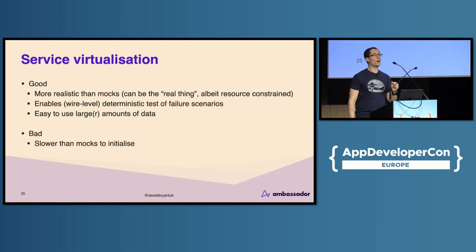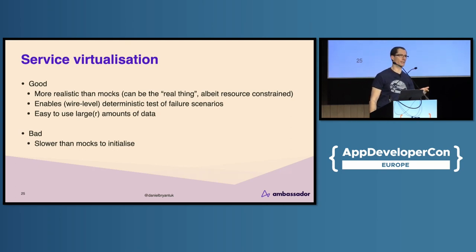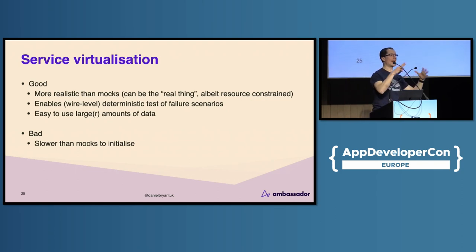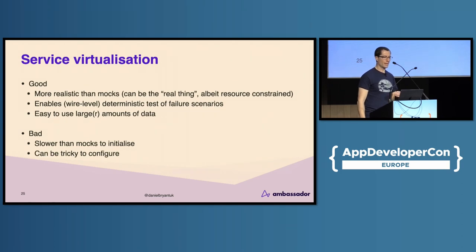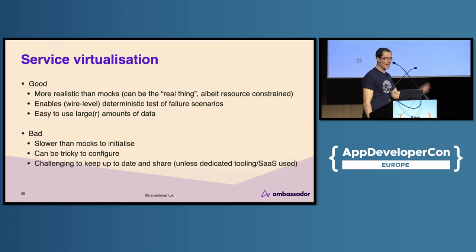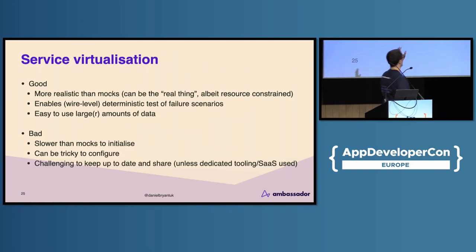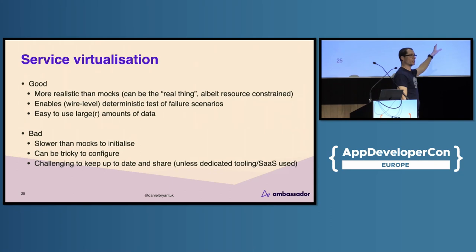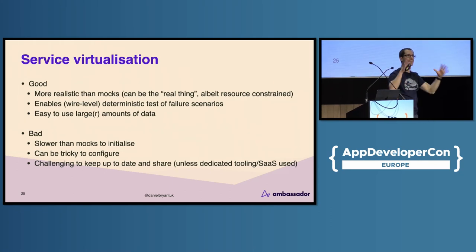The bad with service virtualization: they are slower, often by an order of magnitude, than mocks to initialize. Mocks are in-process within your test runner; these are often out-of-process calls, so it is a bit slower to initialize. It can be tricky to configure — Hoverfly has a bit of a learning curve. And keeping the data up-to-date and shared is tricky, which is where a lot of commercial tooling is being built around this space.